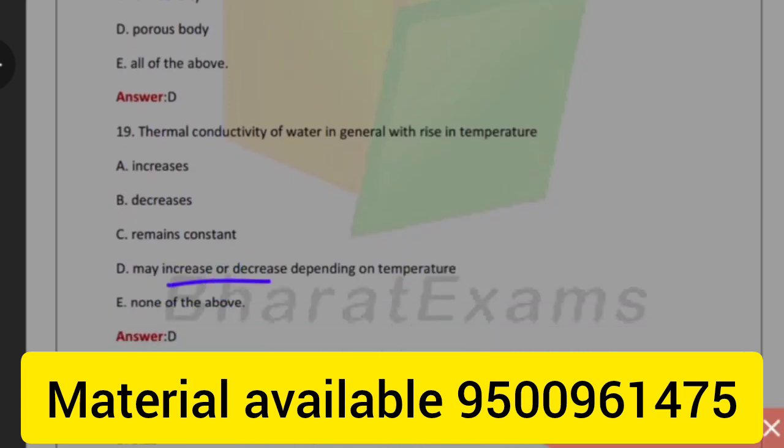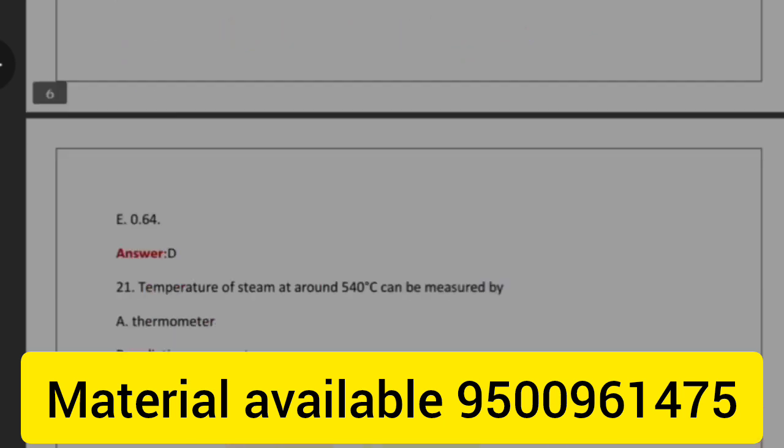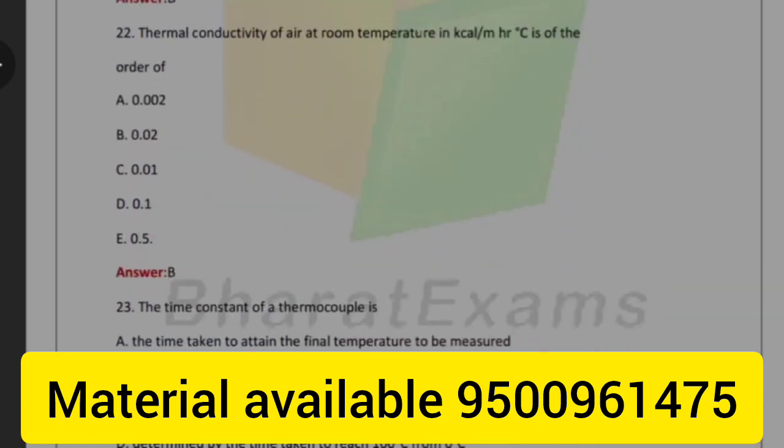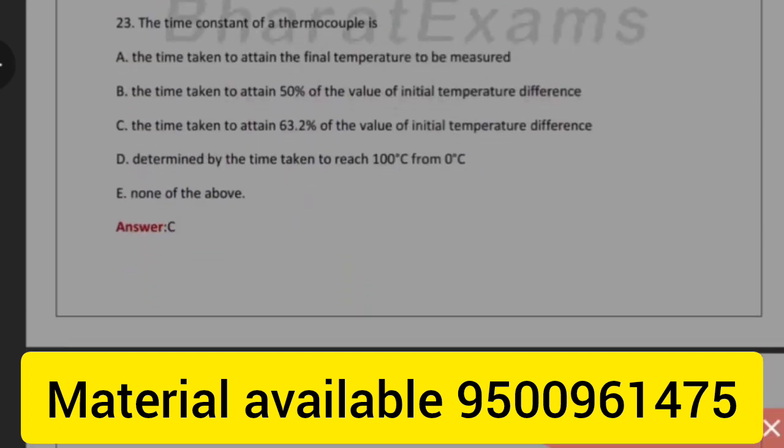Thermal conductivity of water in general with rising temperature may increase or decrease depending on temperature. Thermal conductivity of water at 20 degrees Celsius is of the order of 0.51. Temperature of steam at around 540 degrees Celsius can be measured by thermocouple. Thermal conductivity of air at room temperature in kcal meter hour degree Celsius is of the order of 0.02.